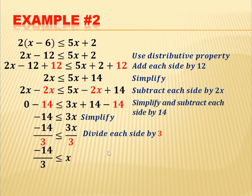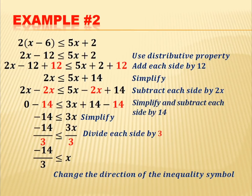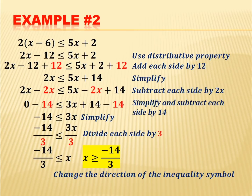Our answer is negative 14 over 3 less than or equal to x. There is another way to write this: we change the direction of the inequality symbol, so negative 14 over 3 is less than x, meaning x is greater than or equal to negative 14 over 3. This is our final answer.